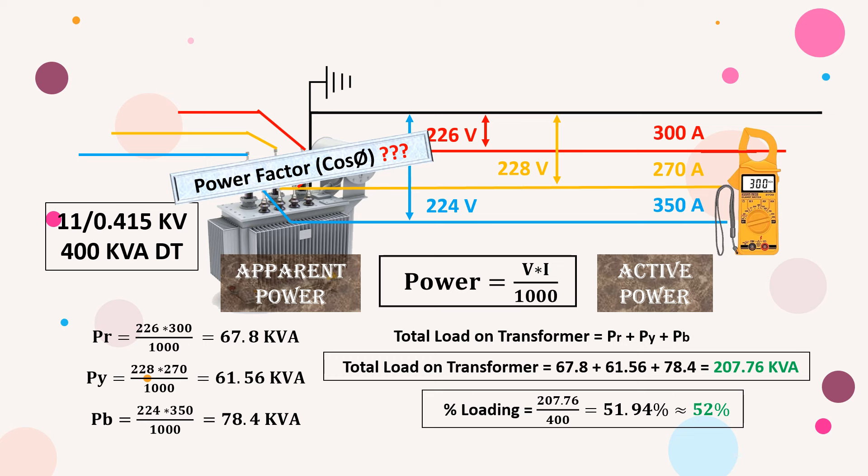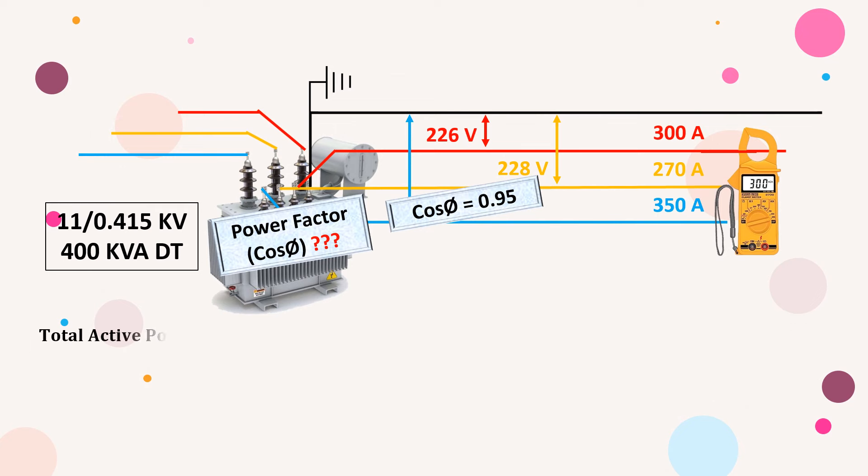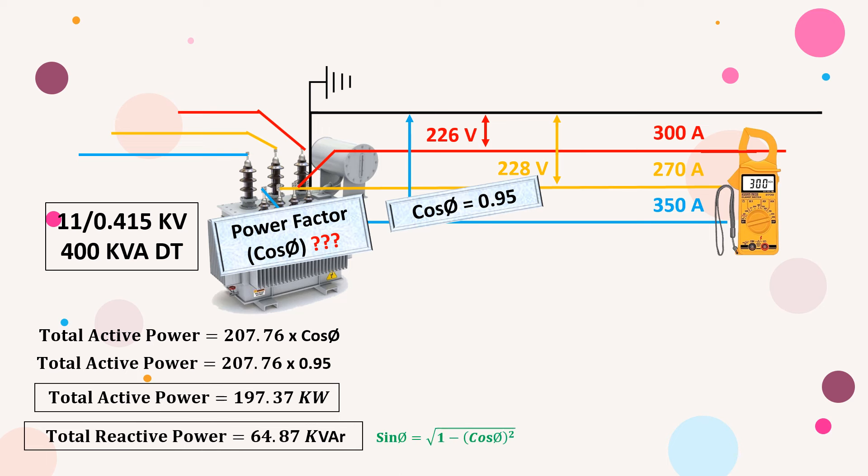Electronic metering will be required. But here, just for understanding purposes, let's take it as 0.95. Now to know the active power, you just need to multiply apparent power by cosφ. And to know the reactive power, multiply it by sinφ. Values will be like this. You can draw the power triangle also.